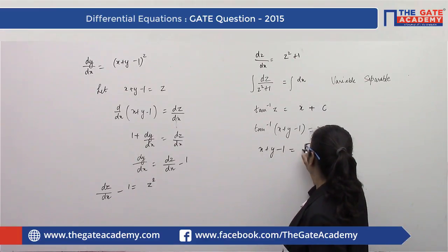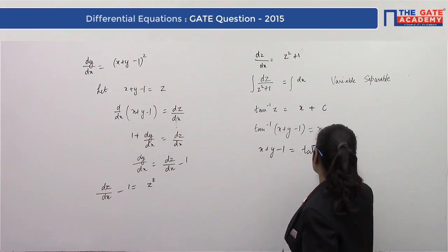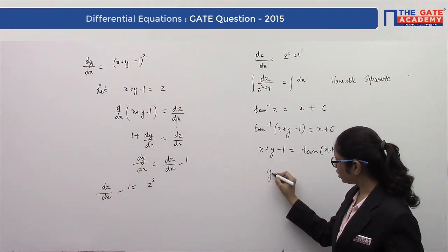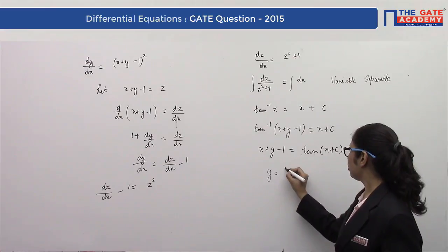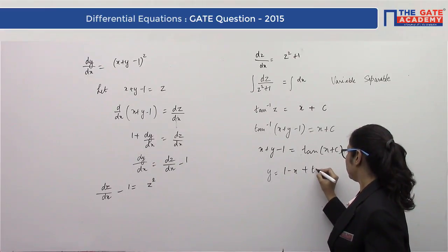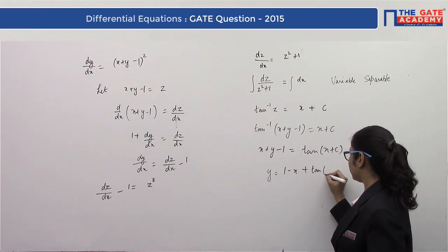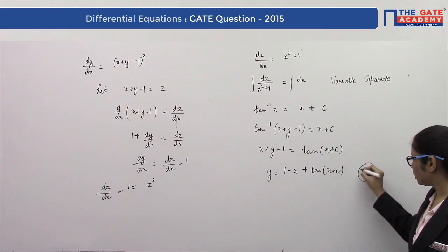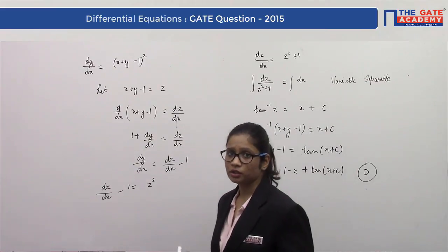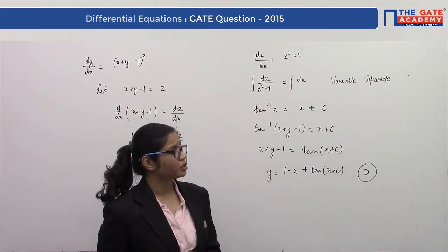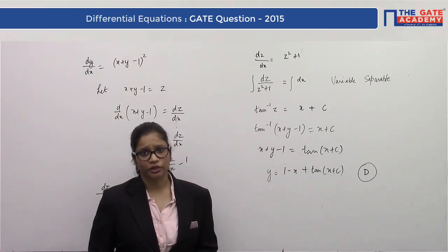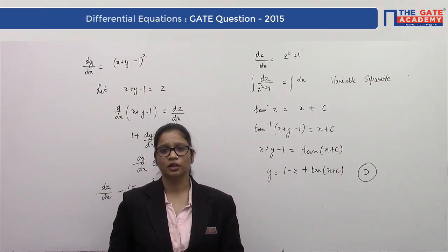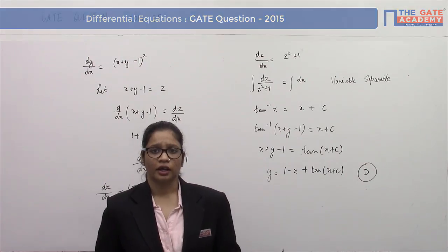Rearranging the equation, taking tan of both sides: x + y − 1 = tan(x + c), which gives y = 1 − x + tan(x + c). This matches option (D). This was a GATE 2015 question from the chapter of differential equations — a nice question solved using the substitution method.